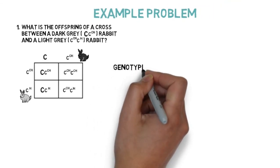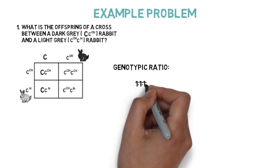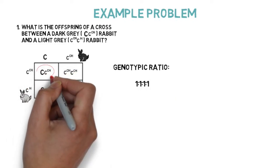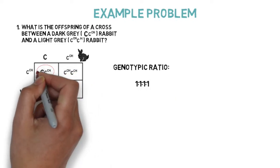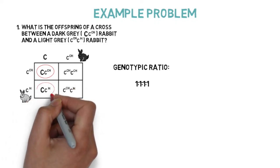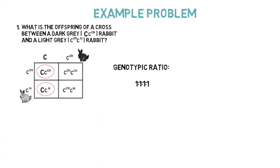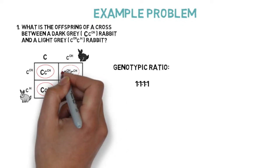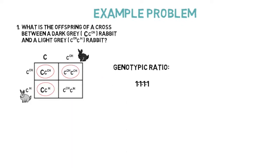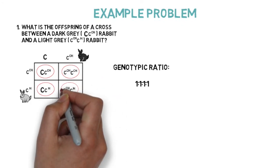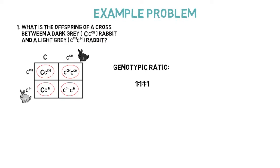Looking at our completed Punnett square, we can see that the genotypic ratio is 1 to 1 to 1 to 1, because there is 1 capital C lowercase cch rabbit, 1 capital C lowercase ch rabbit, 1 lowercase cch lowercase cch rabbit, and 1 lowercase cch lowercase ch rabbit. All four of these genotypes are different.